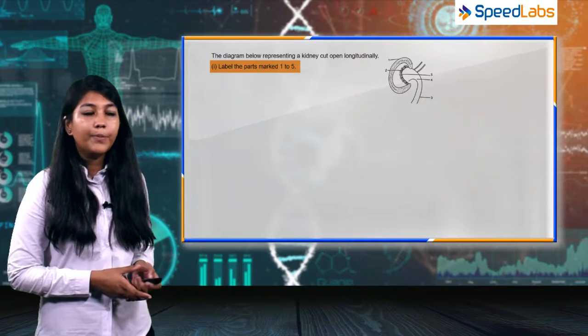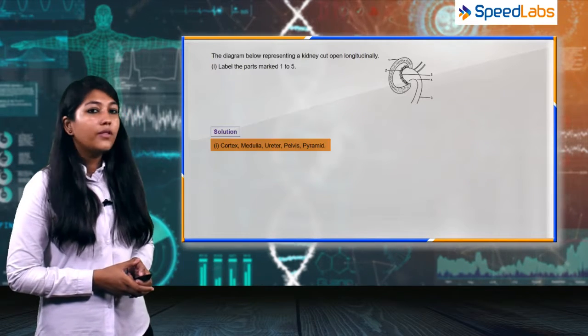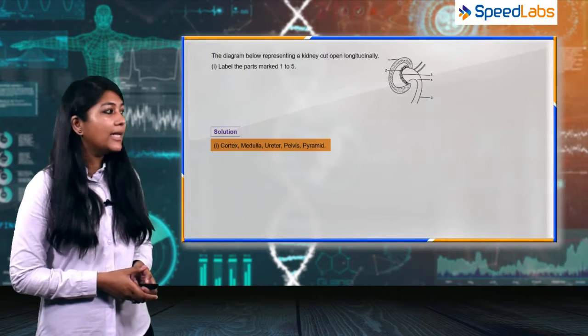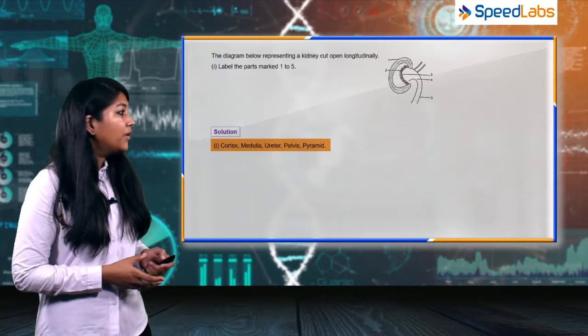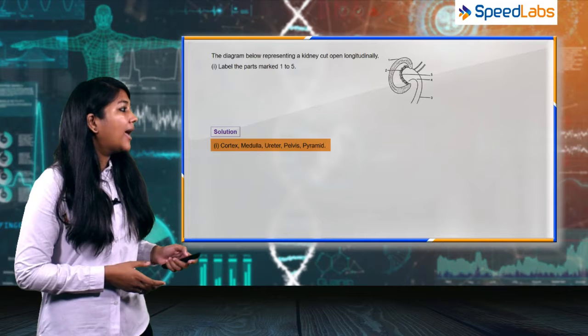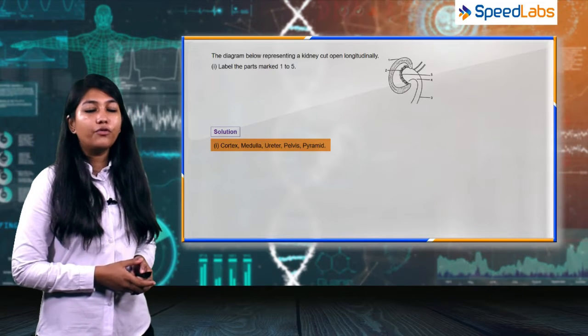The first part of this question is that we have to label the parts marked one to five. The answer is that the first is the cortex, second is the medulla, third is the ureter, fourth is the pelvis, and fifth is the pyramid of the kidney.